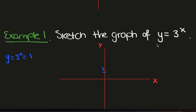3 to the x is positive, just like in the 2 to the x case. So we have a horizontal asymptote at y equals 0. And the same general trend occurs.